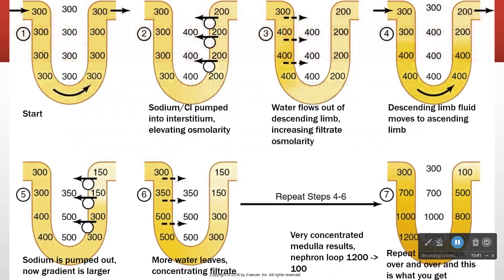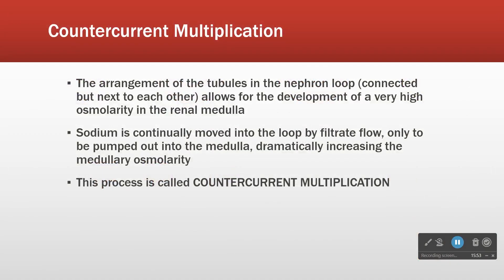The primary way we develop this intense concentration gradient is by this system called countercurrent multiplication. This system exists because of the arrangement of the tubules in the nephron loop. When you look at the nephron and you see that loop go down and come back, there must be a reason why it's shaped like that. The reason is the ascending limb and the descending limb need to be able to interact with the same interstitium — they share an interstitium.